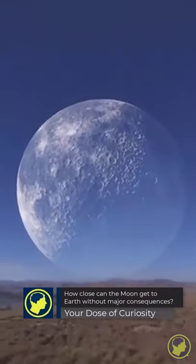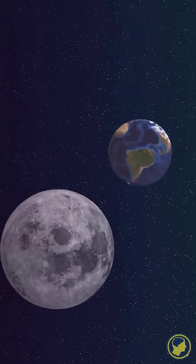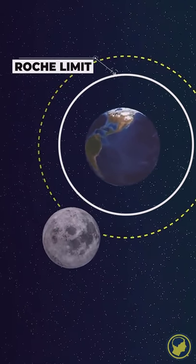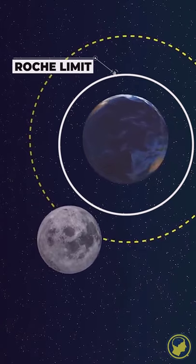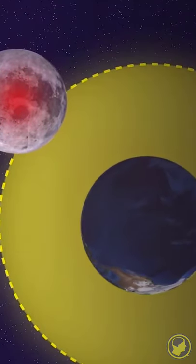How close do you think the Moon can get to Earth before it starts to disintegrate? Such a distance is known as the Roche limit, the point at which the gravity holding a satellite together is weaker than the tidal forces from the parent planet.